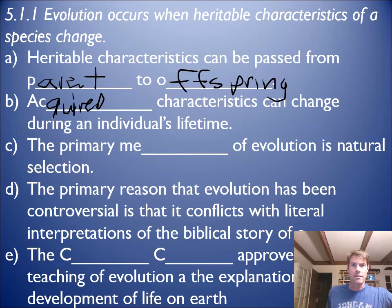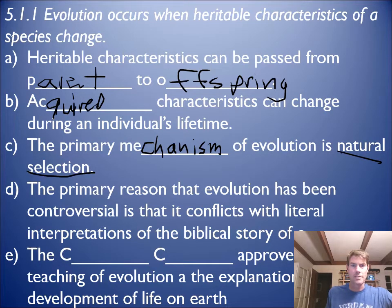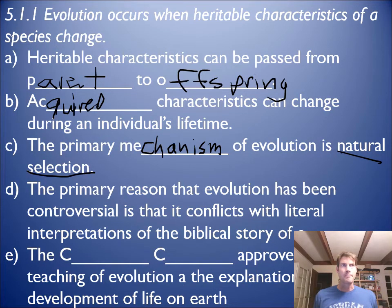The primary way that evolution happens is through natural selection — that's the primary mechanism. Natural selection is what drives evolution. That was really the genius, the driving principle that Darwin wrote about in his book On the Origin of Species.